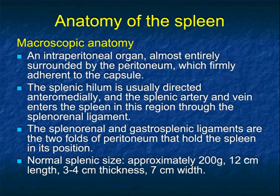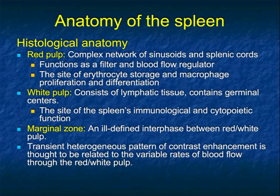In terms of size, a normal spleen weighs about 200 grams. It's about 12 centimeters in length — an important measurement — three to four centimeters in thickness, and about seven centimeters in width. The length is what people typically focus on. Over 12 centimeters, you begin to think about splenomegaly, though you need to be careful because spleens have variable shapes. Perhaps calculating volumes would be a better approach.